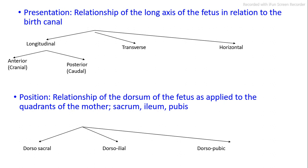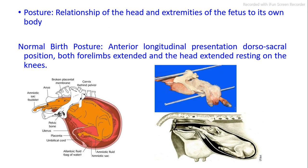Presentations may be longitudinal, transverse, or horizontal. Positions are described as anterior/cranial, posterior/caudal, dorsosacral, dorsoilial, or dorsopubic. Posture is the relationship of the head and extremities of the fetus to its own body. Normal birth posture is anterior longitudinal presentation with dorsosacral position.